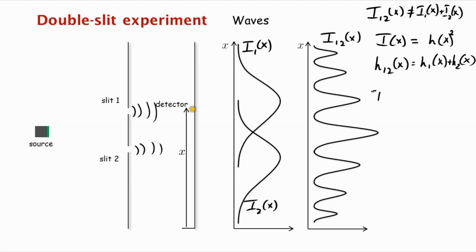So you have i12 of x, when both slits are open, the energy is h12 of x squared. But this is not equal to h1 of x squared plus h2 of x squared, which was i1 of x and i2 of x.